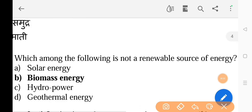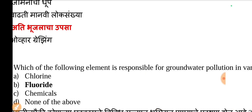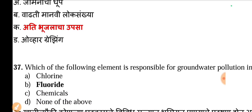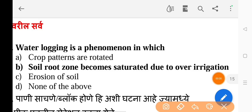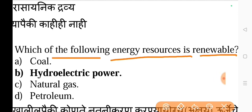Next question: Which among the following is not a renewable source of energy — the correct answer is option B, biomass energy. Next question: Which of the following element is responsible for groundwater pollution in various states — the correct answer is option B, fluoride. Next question: Water logging is a phenomenon in which — the correct answer is option B, soil root zone becomes saturated due to over irrigation. Next question: Which of the following energy resources is renewable — the correct answer is option B, hydroelectric power.